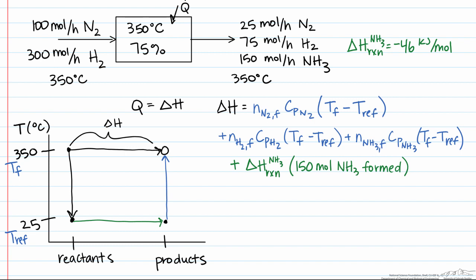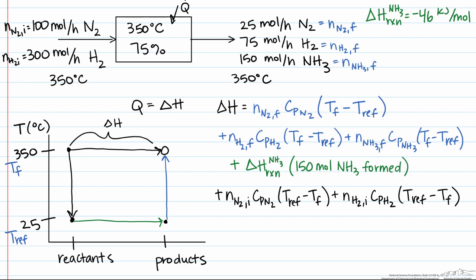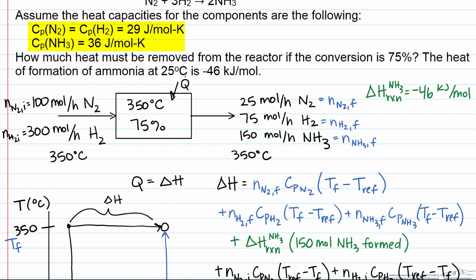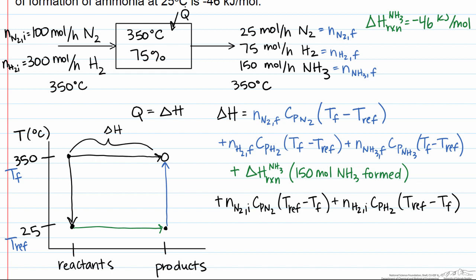The final term, shown in black, is cooling down the reactant stream: 100 moles of nitrogen and 300 moles of hydrogen times their heat capacities times the temperature difference, going from 25°C minus the initial state of 350°C. The heat capacity information is given: 29 J/mol·K for hydrogen and nitrogen, and 36 J/mol·K for ammonia. We've now specified all variables — moles, temperatures, and heat capacities — needed to calculate the enthalpy change along this path.